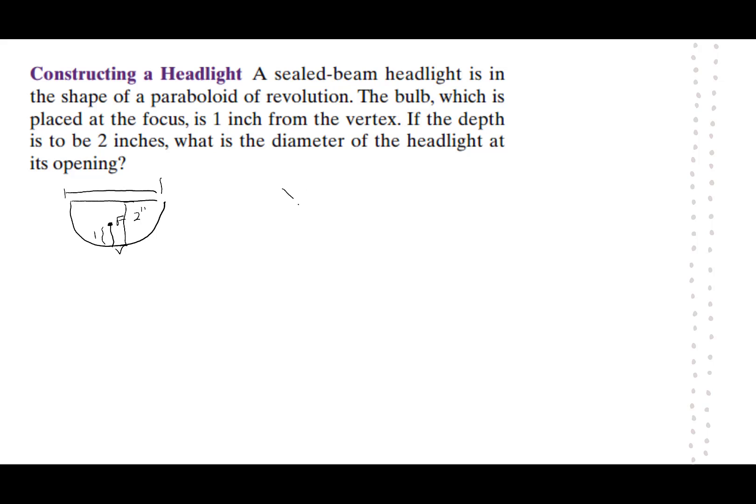This looks like x squared equals 4ay. There's no h, k because I decided let's just make the vertex zero, zero. And then a we happen to know is one because it's the distance from the focus to the vertex. So I have x squared equals four times one times y. Then when I'm looking at this two, that would be a measure of y. So now I have x squared as four times one times two, which is eight.